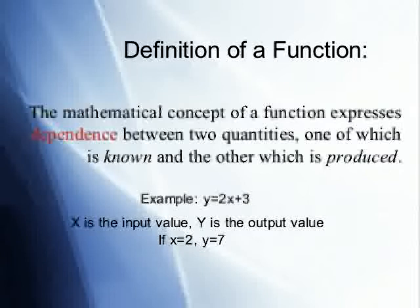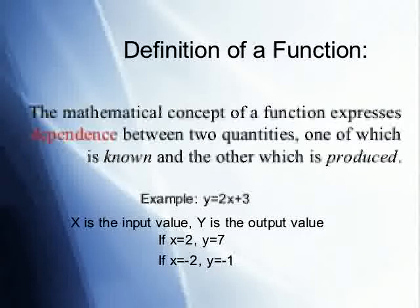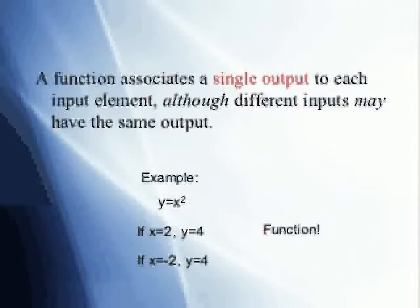A common metaphor for understanding input and output values is to think of a machine, where a product is put into the machine, a process is performed on that, and the output is another unique product. Again, if the input were to be negative 2, our output value would be negative 1.